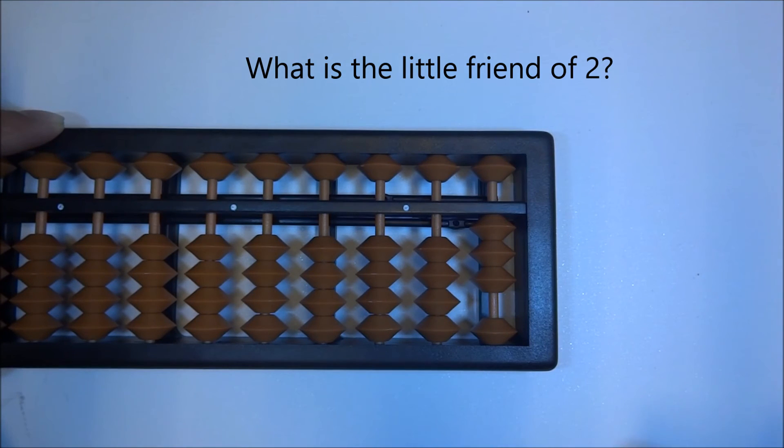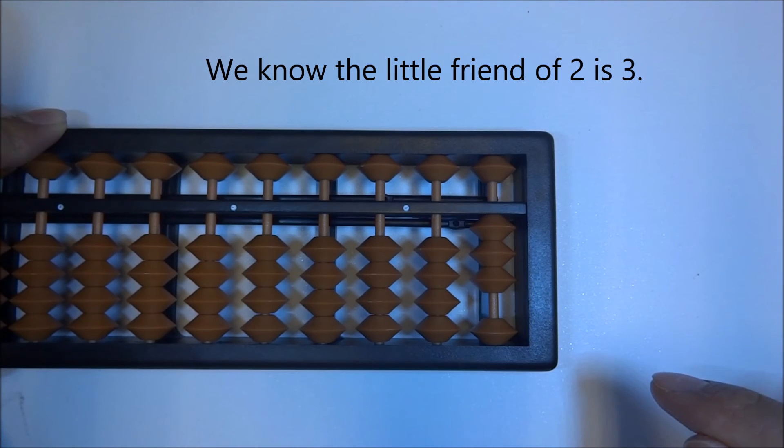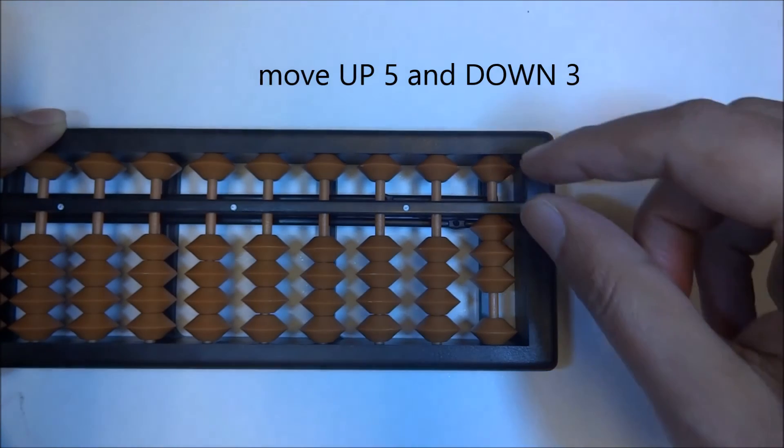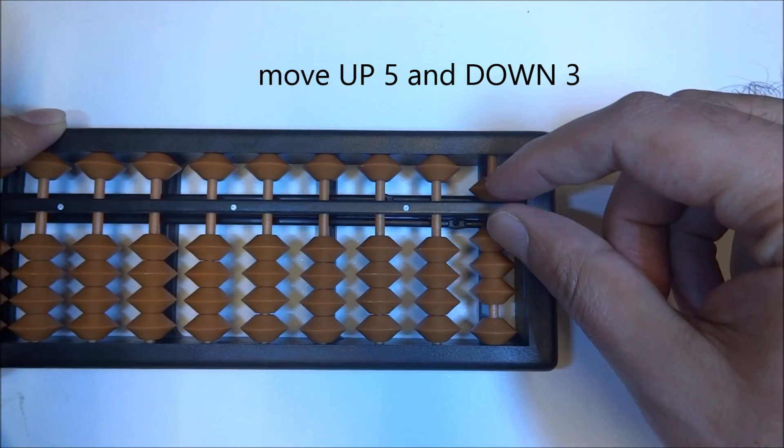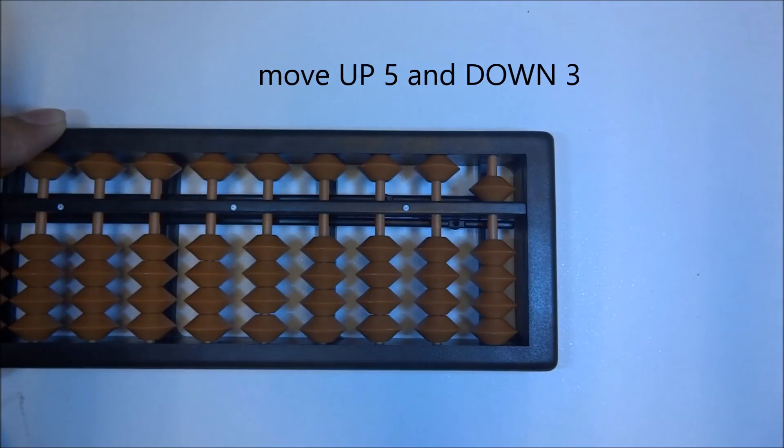3 plus 2. So let's find a little friend of 2, which is 3. So what are we going to do? Up 5, down 3. Up 5, down 3. And there we go. 3 plus 2 is 5.